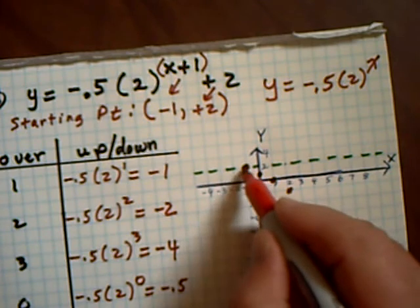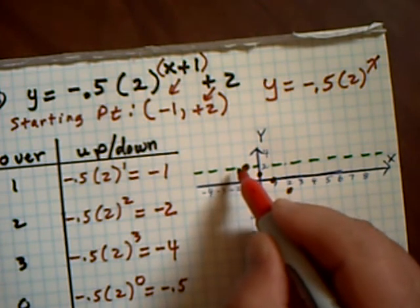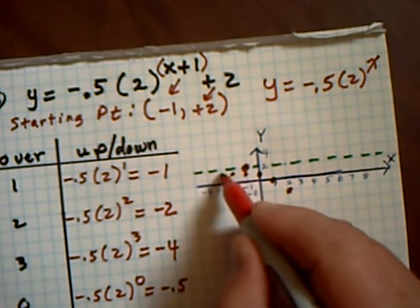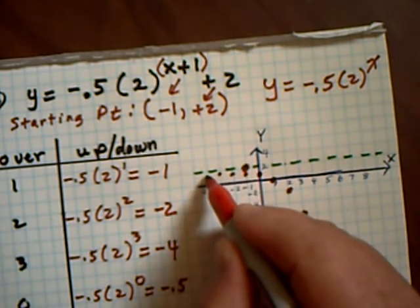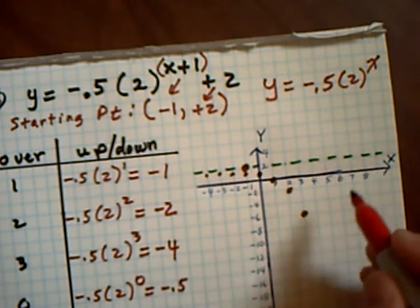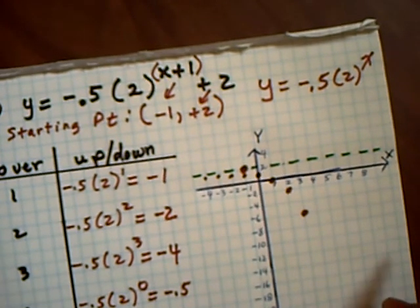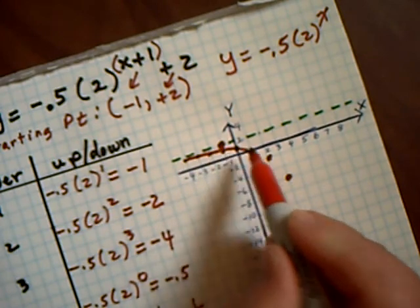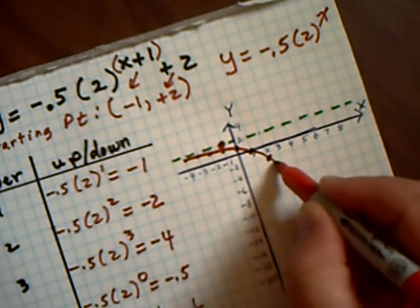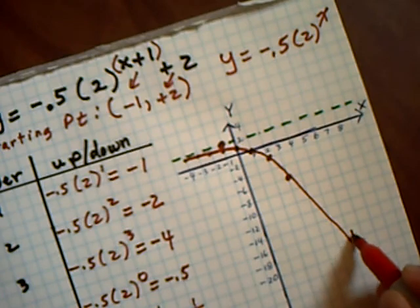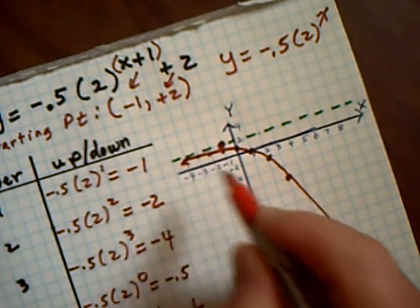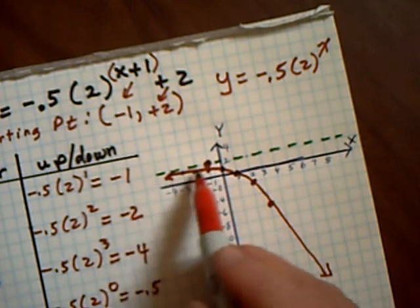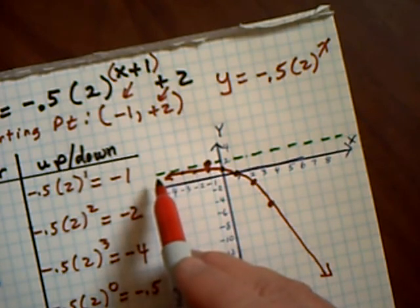If I go to the left 1, it's going to go down a quarter. To the left 2, it'll go down an eighth. To the left 3, it'll go down a sixteenth, and so on. So what your graph ends up looking like is a flipped exponential graph with a new starting point. That becomes what we call an asymptote — it gets closer and closer and closer to that green line, but never touches.